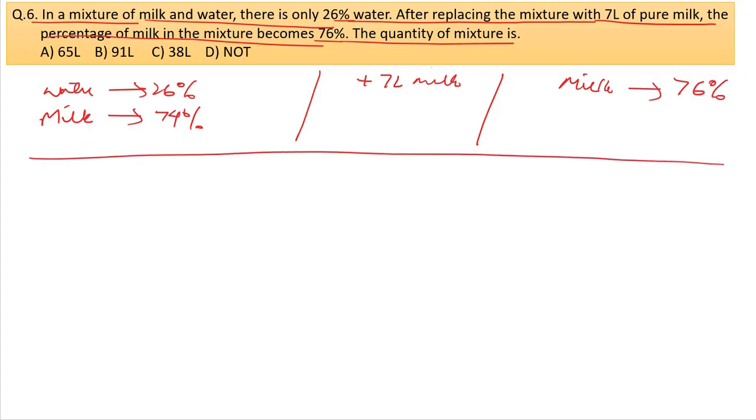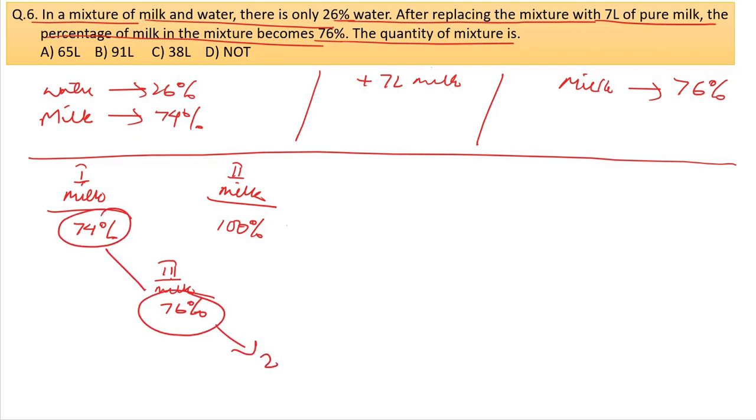We replace some mixture with 7 liters of pure milk. After replacement, milk becomes 76%. Using alligation: 76 minus 74 equals 2, and 100 minus 26 equals 74. So the ratio is 2 to 74, which simplifies to 1 to 37.